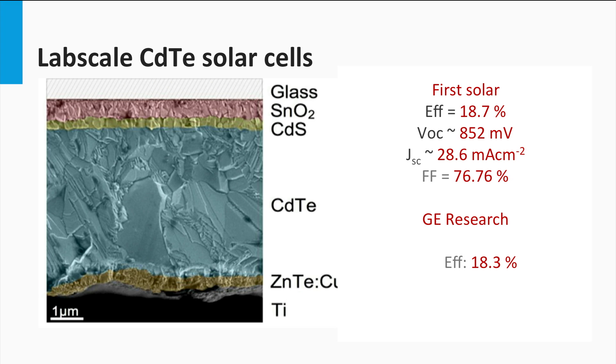The record conversion efficiency of lab-scale solar cells is 18.7 percent as obtained by First Solar in 2013. The open-circuit voltage of the record cell is 852 mV. The short-circuit current density is 28.6 mA per square centimeter with a fill factor of 76.7 percent.